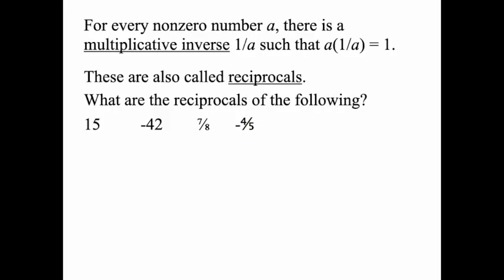One important concept is multiplicative inverses. For every non-zero number a, there is a multiplicative inverse 1 over a such that if you multiply those two numbers together, you get 1. You have probably heard this more often as a reciprocal — reciprocals are also called multiplicative inverses. All we do with reciprocals is flip the number upside down.